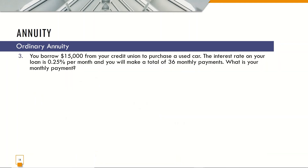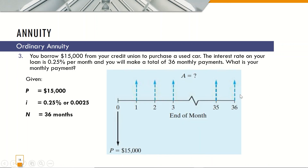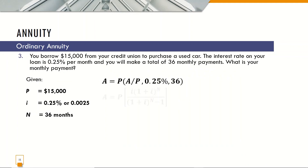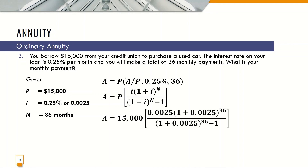Next example: You borrow $15,000 from your credit union to purchase a used car. The interest rate on your loan is 0.25% per month and you will make a total of 36 monthly payments. We are asked for the monthly payment A, the annuity amount, given P equal to $15,000. The cash flow diagram shows 36 months of unknown payments A from the present value of $15,000. Using the formula for A given P and substituting the values, the quantity results to 0.02908, so the annuity A is equal to $436.22.